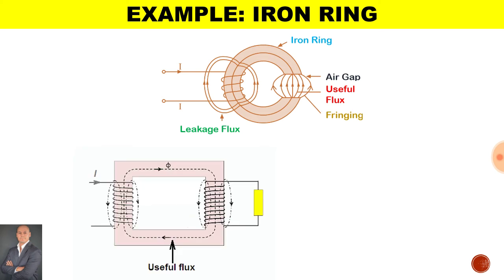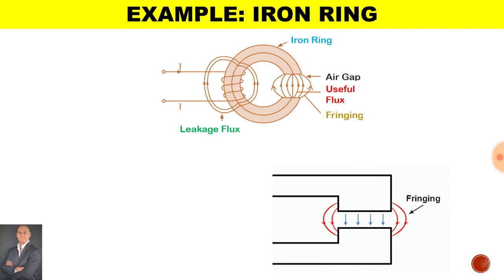Now just to show you on a single phase transformer, where we will find leakage flux, it'll be found around coil A and coil B. Our fringing flux is found around the sides of the air gap.